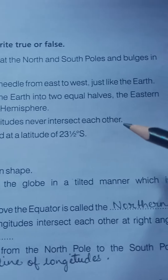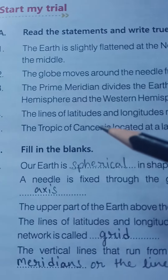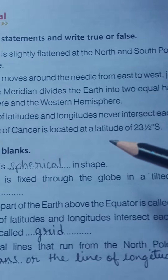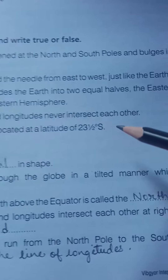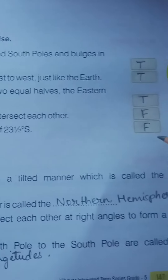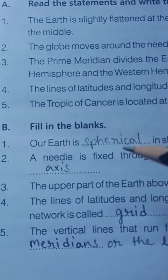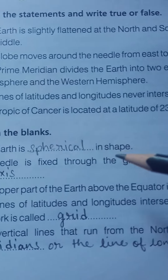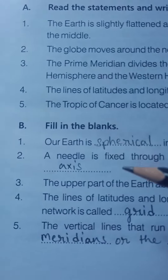Number four: The lines of latitudes and longitudes never intersect each other. False. Number five: The Tropic of Cancer is located at a latitude of 23 and a half degrees south. False. B: Fill in the blanks. Number one: Our earth is blank in shape. Our earth is spherical in shape.